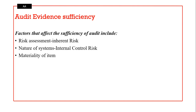The nature of systems also matters. If internal control risk is high, you want to be very careful with how you collect your evidence, because it is likely that you're going to issue a qualified audit opinion. Materiality of an item — the importance of an item in the eyes of the user — will determine the extent to which you corroborate audit evidence.